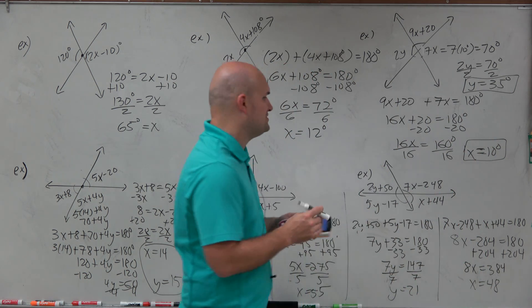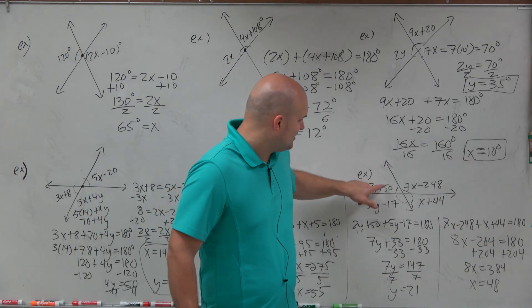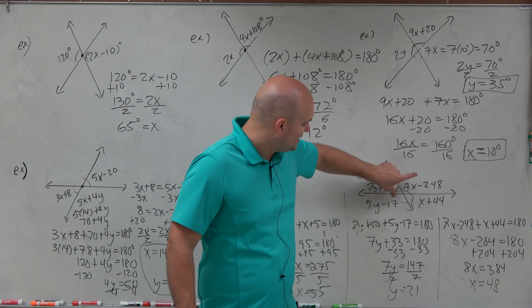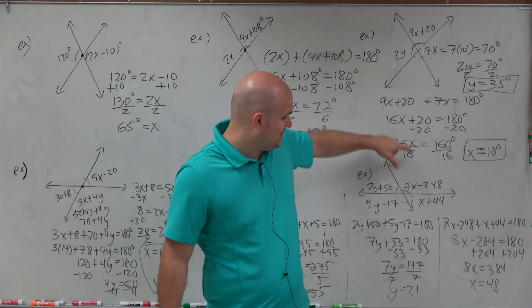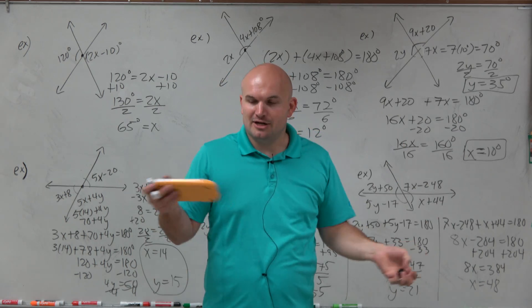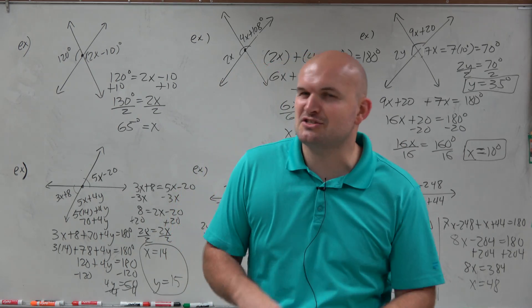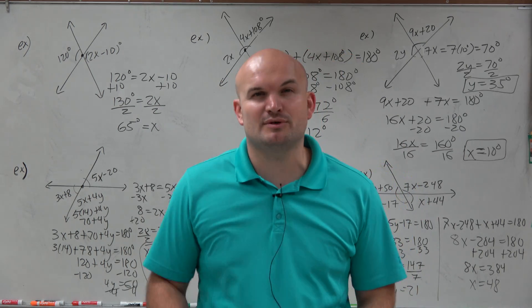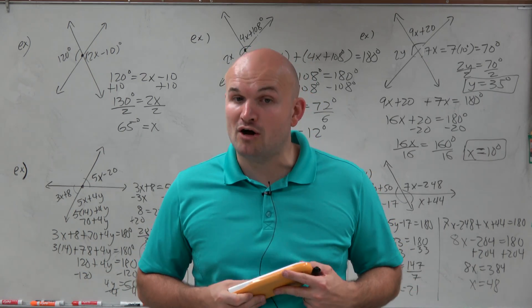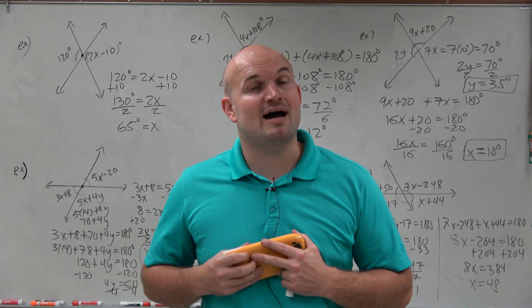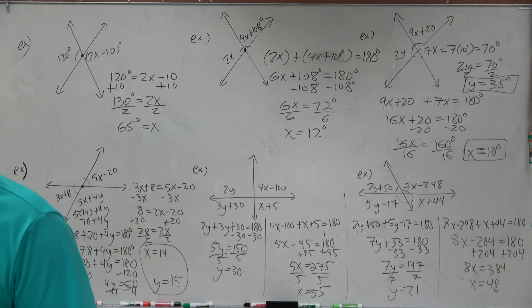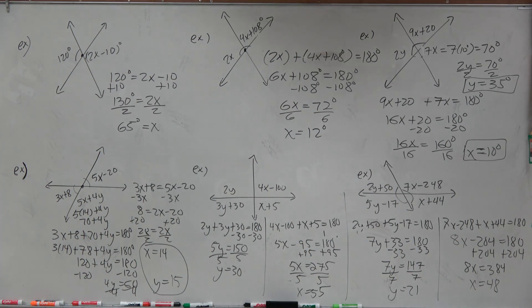For all of these, you can plug your answers back in to verify. Make sure vertical angle pairs are equivalent to each other and supplementary pairs add up to 180. If you're taking a test, make sure you check your answers. That, ladies and gentlemen, is how you solve for x and y when you have intersecting lines. Thanks.